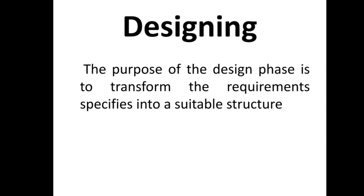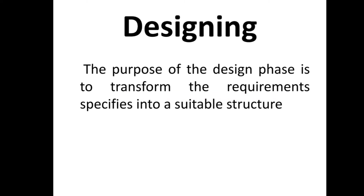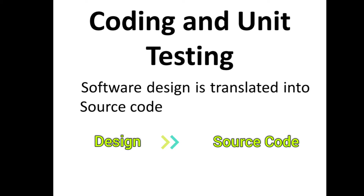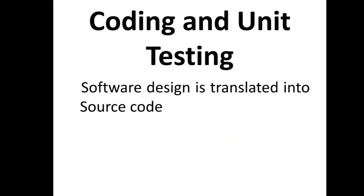Then comes the designing part. The main aim of the design phase is to transform the requirements specified in the SRS document into a structure that is suitable for implementation in some programming language. After the designing, the coding and testing phase follows. In the coding phase, the software design is translated into source code using a suitable programming language — each design module is coded. The aim of the unit testing phase is to check whether each module is working properly or not.